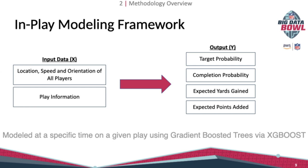The in-play modeling framework takes as inputs the location, speed, and orientation of all players at a specific frame, and outputs for each receiver at each frame: the probability of being targeted, given they're targeted the probability of a completed pass, given a completed pass how many yards we'd expect them to gain, and then taking into account the game state and play information, provides an estimate for the expected points added.